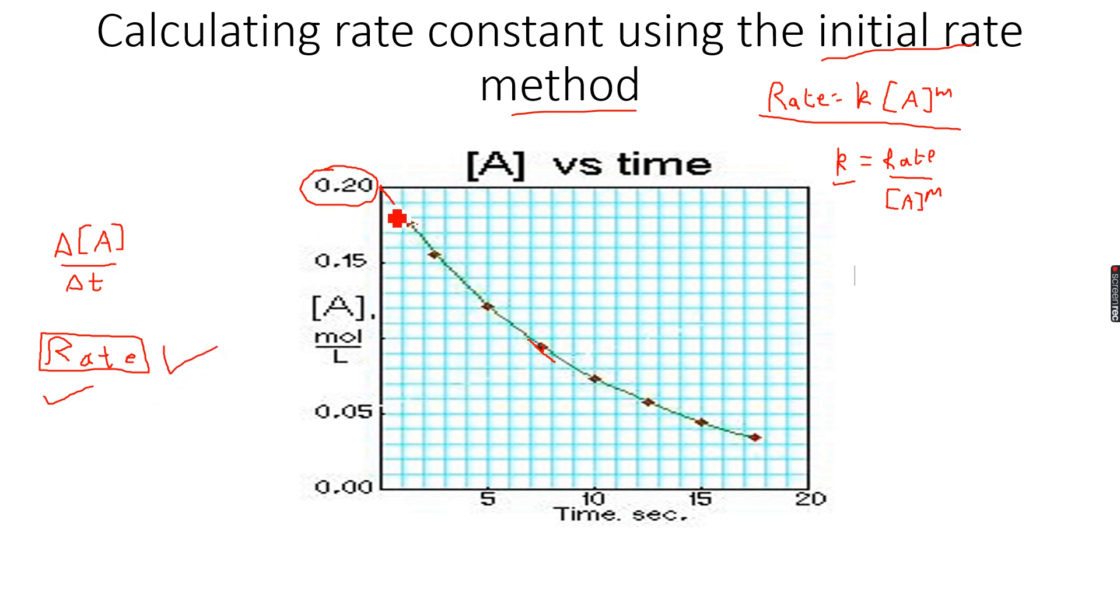The rate is the gradient of the tangent at the starting point, which is at 0, 0.20, which is this coordinate. We calculate the gradient here and we know that the concentration is 0.2. So now we can calculate K, which is rate over 0.2 to the power of M. Now we can calculate an accurate value of K. This is known as the initial rate method.